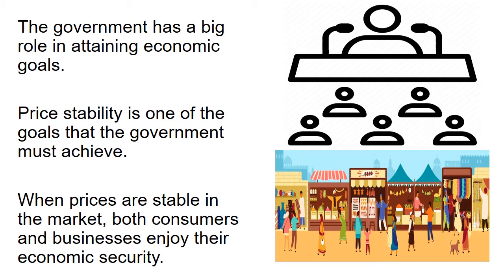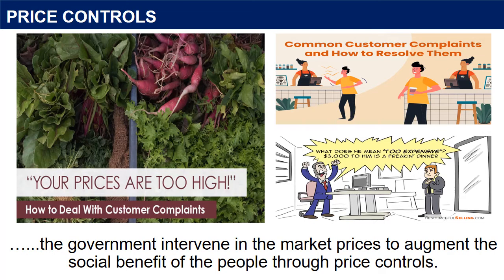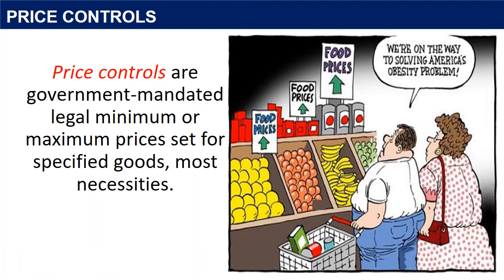Government intervention is needed to ensure that market prices are stable. The supply and demand model shows how people and firms will react to the incentives that laws provide to control prices, in ways that will often lead to undesirable consequences. Many Filipinos are complaining about the high prices of commodities, and can't afford to buy their needs at higher prices. With this, the government intervenes in market prices to augment the social benefit of the people through price controls. Price controls are government-mandated legal minimum or maximum prices set for specified goods, most necessities. It is considered a government policy to stabilize market prices for the benefit of consumers. However, there are consequences of imposing these price controls. One of the price controls that the government may adopt is the price ceiling.